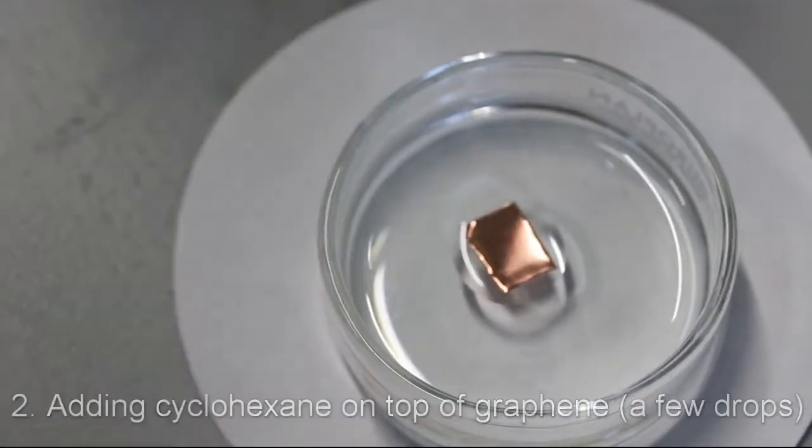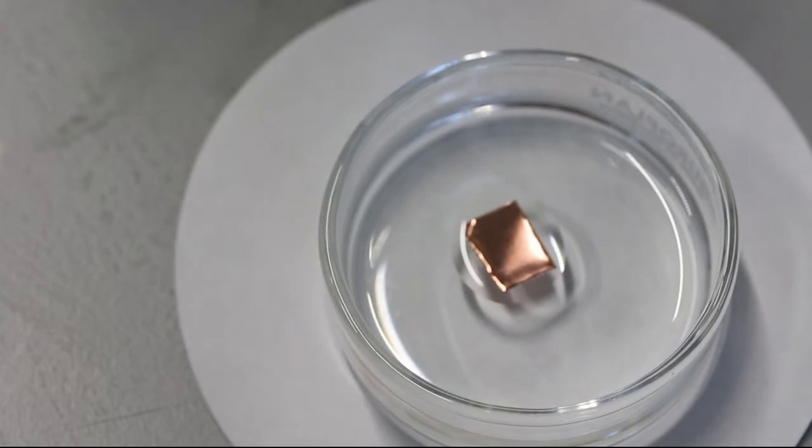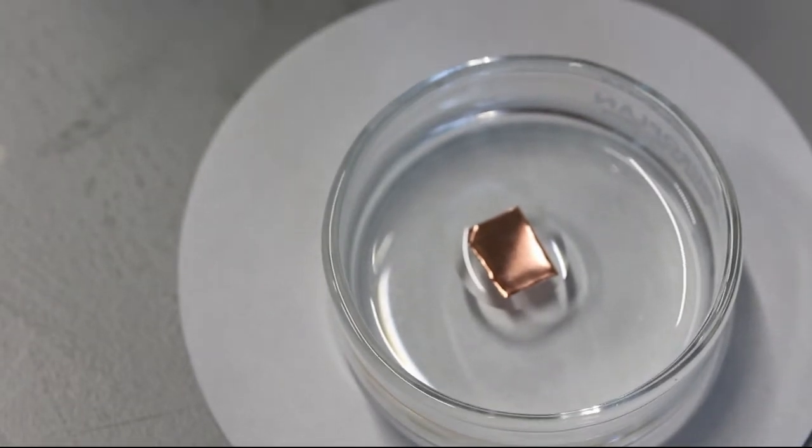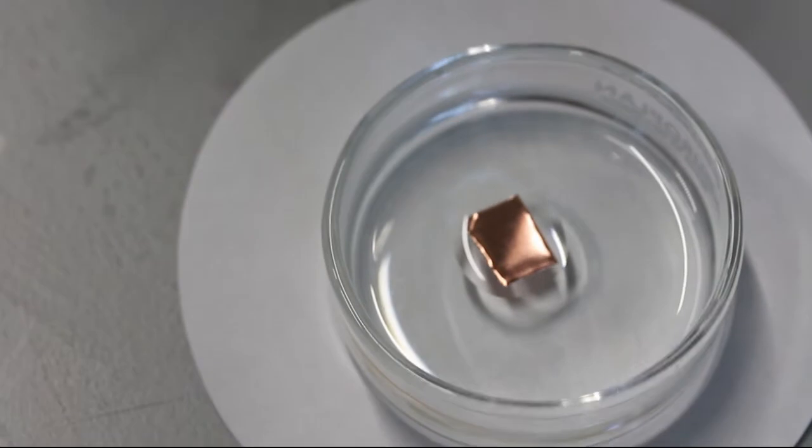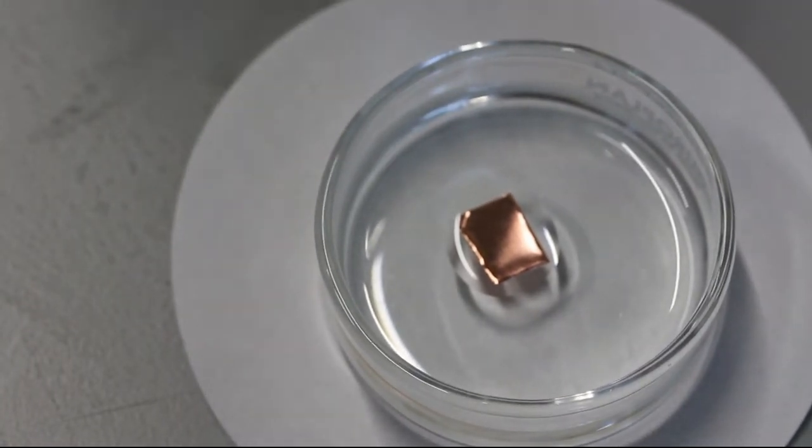The downside of having too little cyclohexane is that it can evaporate before copper is fully etched and leave the graphene unprotected. To preclude that, we can carefully add more cyclohexane after this first layer is frozen.